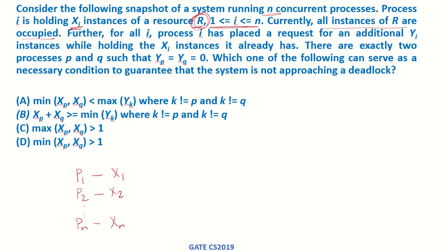For all i processes, each has placed a request for an additional yi instances while holding the xi instances it already has. That means each process has now placed a request for additional yi instances of this resource r. So p1 is now requesting y1 more instances of r, p2 is requesting y2 more instances of r, and so on.